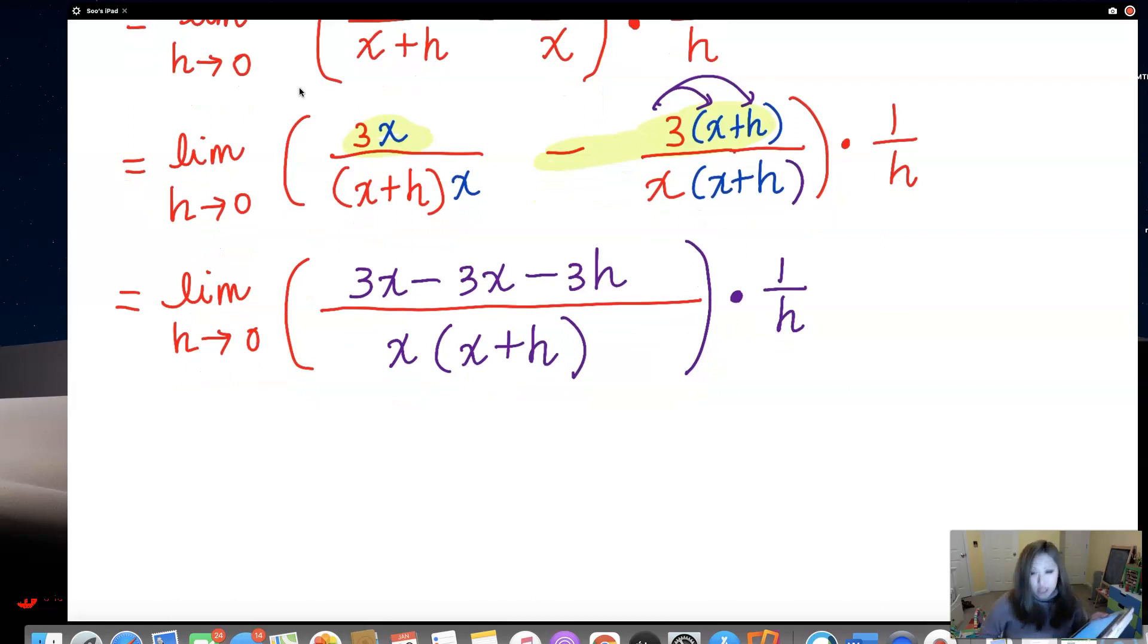Let's see if anything cancels out. I'm going to get a new chair, this chair is so uncomfortable. All right, 3x and negative 3x cancels out. What else? If you take a look, h and this h also cancels out.